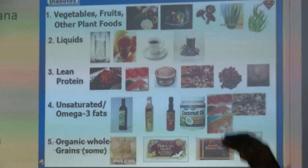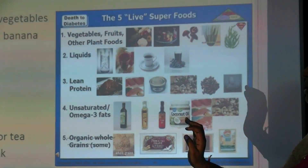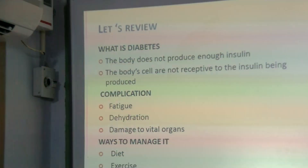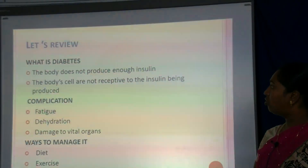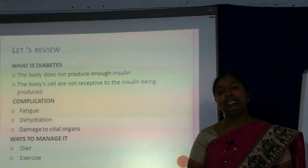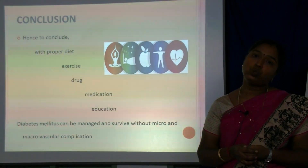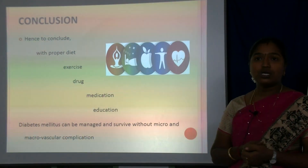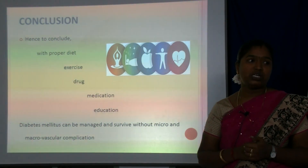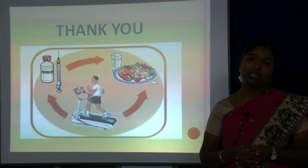Foods that are permitted include green vegetables, onion, mint salad, skim milk and buttermilk. In review: diabetes is a condition where the body does not produce enough insulin or body cells are not receptive to the insulin being produced, leading to complications such as fatigue, dehydration and damage to vital organs. Diabetes can be managed through diet and exercise. With a proper diet, exercise, medication and education, diabetes mellitus can be controlled and managed without macrovascular complications.